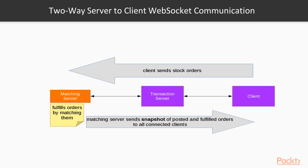As you can see in the diagram, right now we have the first portion where the client sends stock orders to the transaction server, which are relayed to the matching server. However, we need the second portion, which is where the matching server sends a snapshot of posted and fulfilled orders to all connected clients so that they have a view of the actual stock exchange at certain points in time.